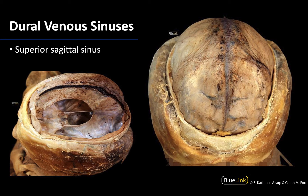We're going to start with the longest and typically easiest to identify, which is the superior sagittal sinus. You can see it here visible in this anterior superior view, running right along this line, deep to this region. You can also see the superior sagittal sinus in this more superior lateral view where the brain has been removed, and it's running along the superior border of the falx cerebri — a dural partition that runs between the two cerebral hemispheres.